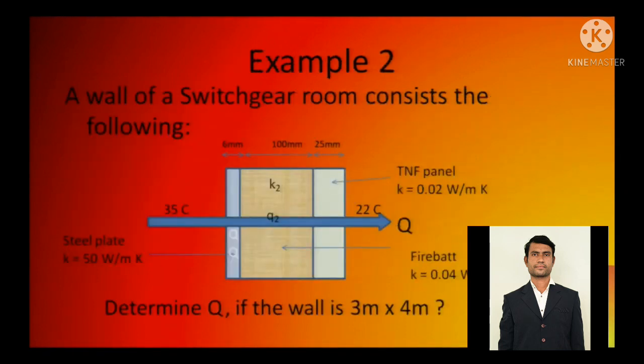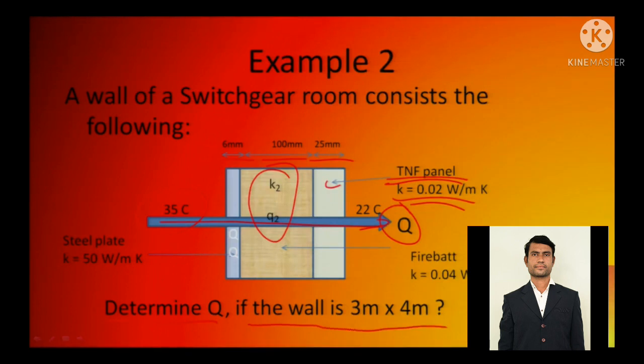The same thing you can do. This is a firebat - firebat means a fire resistance wall. From here the heat is flowing, this is q. This is an insulation panel, the TNF panel conductivity is given, these are the thicknesses given. Determine q if the wall is having this much area. This has k of this, this has k of this. This steel plate having k 50 watts per meter Kelvin, these are various x1, x2, x3. So you need to calculate q.